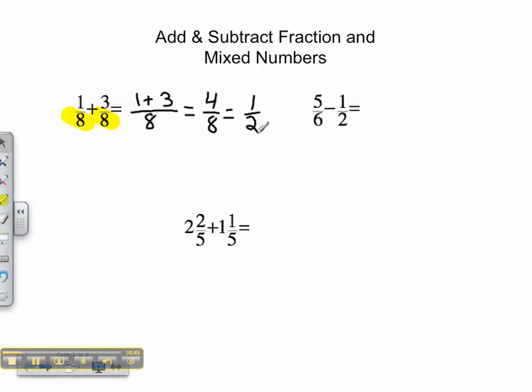In our next problem, we notice that the denominators are different. So we have to find a common denominator. I know that 2 goes into 6, so I'm going to change 1/2 into something with a denominator of 6. So I know 2 times 3 is 6, so I'm going to multiply the numerator also by 3. 1 times 3 is 3. And my new fraction is 3/6. So I can do 5/6 minus 3/6.